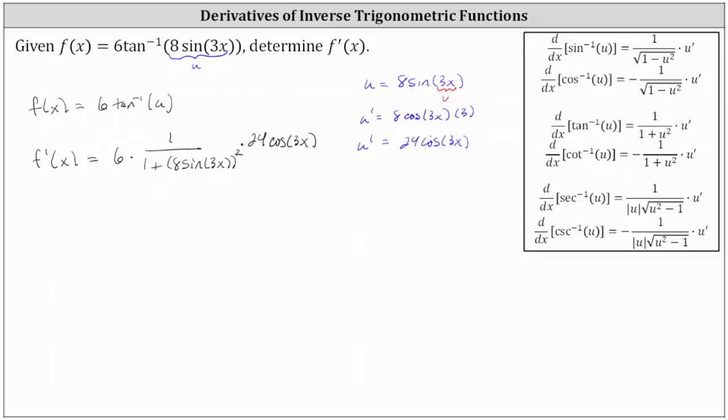And now let's go ahead and simplify. We have f prime of x equals, in the numerator we have six times 24 cosine three x, which is 144 cosine three x. This is divided by the quantity one plus the square of eight sine three x, which we'll write as 64 sine squared three x.